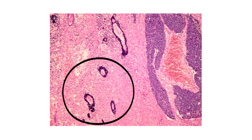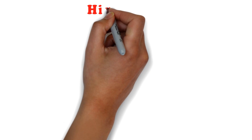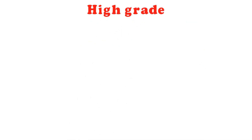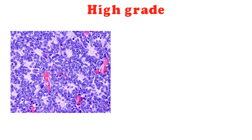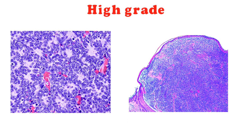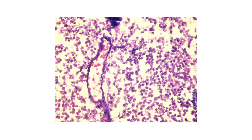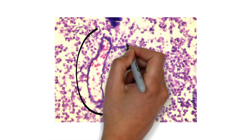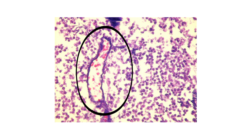The Azzopardi phenomenon is not specific to small cell carcinoma of the lung. It can also be seen in high-grade carcinomas with rapid cell turnover, such as medulloblastoma and Merkel cell carcinoma. On hematoxylin and eosin stained sections, blood vessels within or close to the tumor and in necrotic areas exhibit deeply basophilic staining of the vessel wall.